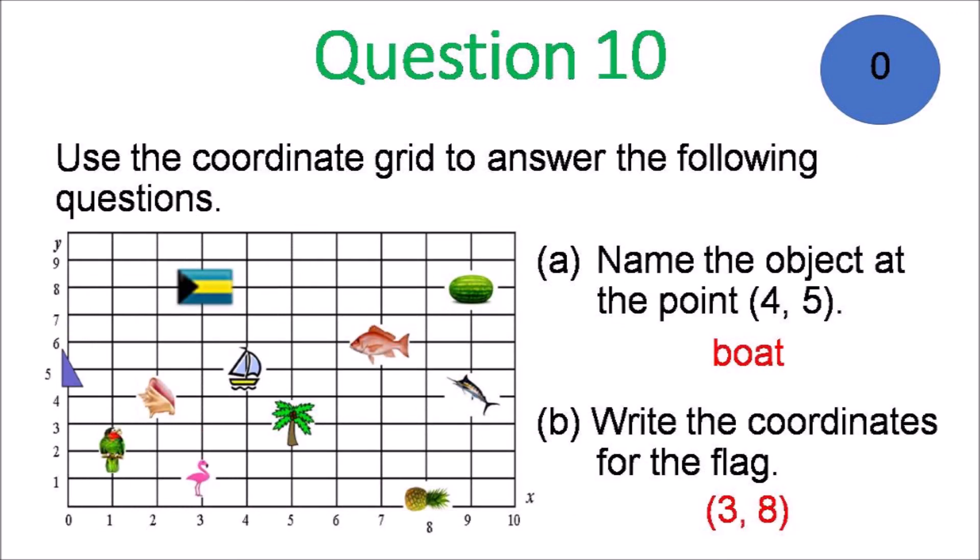Question 10. Name the object at the point 4,5. That's a boat, a sailboat. And B, the coordinates for the flag would be, look along the bottom 3 and then along the side 8, so 3,8.